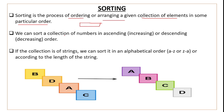We can sort a collection of numbers in ascending or descending order. If the collection is of strings — a list or array of string elements — we can sort it in alphabetical order, from A to Z or Z to A, or according to the length of the string.